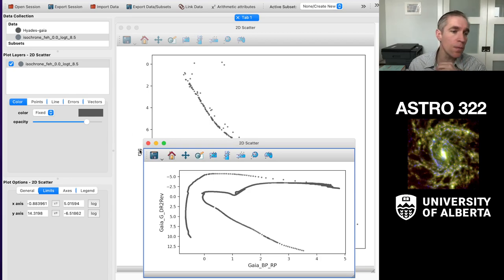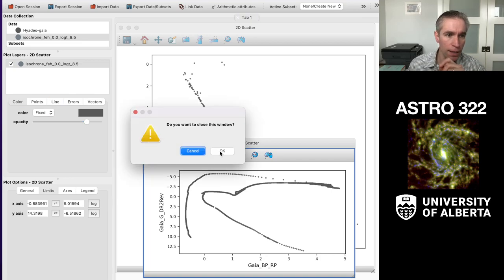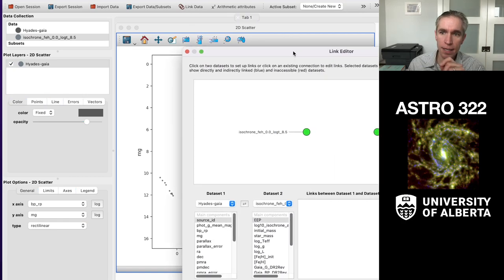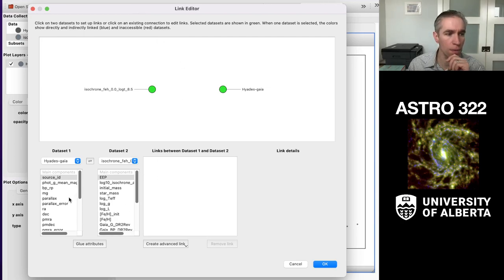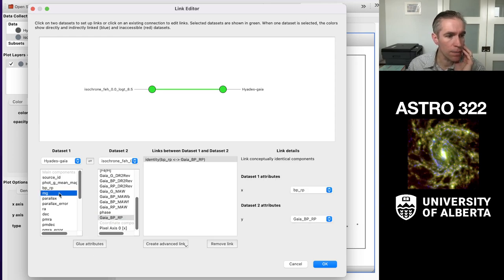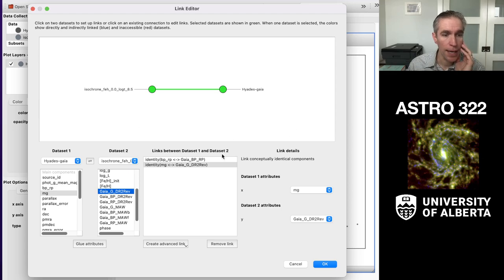So in glue, if I want to plot them on each other, what I have to do is create the correspondence between the GAIA data for the cluster and the isochrome data, which is just a tabulated value. So the way I do that is close the window, and I'm going to go up to the link data button right here, click it, and that's going to give me my link editor. And what I'll do with my link editor is I'm going to say the BPRP variable in the observed data is the GAIA GPRP in the isochrome data. Plot that. MG, I'm going to make GAIA DR2 revised, and glue those. And now these things all work well together.